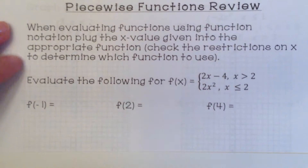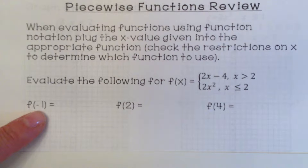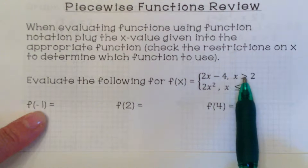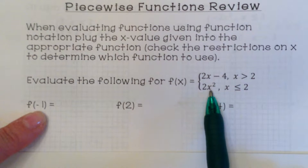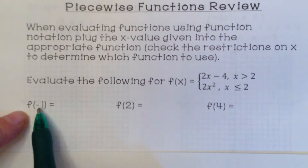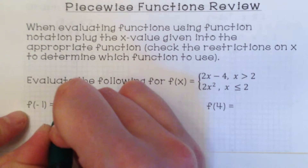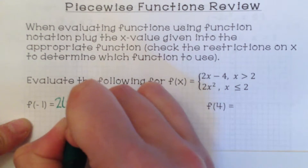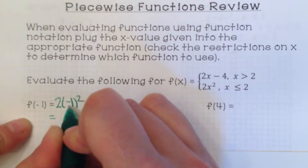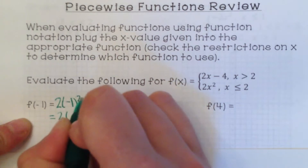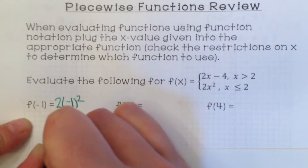For this first one, the x value is negative 1. That's less than or equal to 2, so I have to use the second function: 2x squared. Plugging in negative 1, we have 2 times negative 1 squared. Using order of operations, exponents come before multiplication: negative 1 squared is 1, and 2 times 1 is 2.